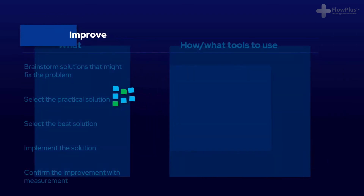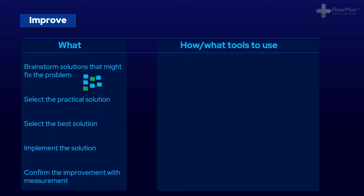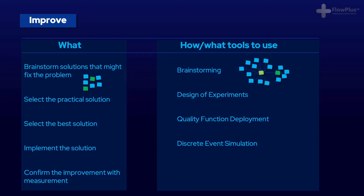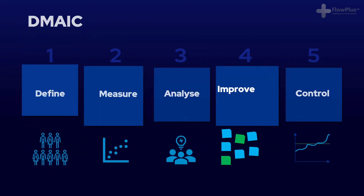Moving on to improve. Improving involves actually implementing the solutions to overcome the identified root causes. Tools here include brainstorming, design of experiments to pick the solutions that provide the greatest impact on reducing the problem, and QFD or quality function deployment to improve the quality of the product or service for a customer. Other tools include discrete event simulation, which can be used to identify optimized batch sizes, optimal factory layouts, and process flows. The key thing is that these solutions should actually be implemented by the end of this stage.